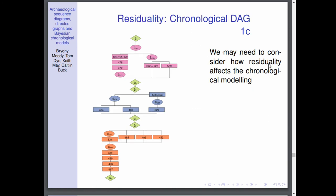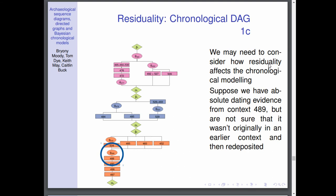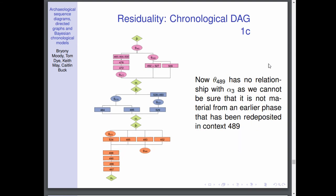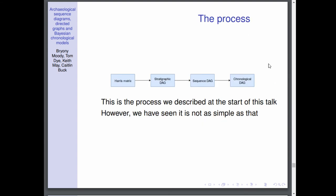A final idea we might want to look at is about residuality. Say that we found dating evidence in context 489, but we're not convinced that it wasn't from an earlier context and then redeposited. Then this changes the structure again, and now θ_489 no longer has a relationship with context 488 or α_3 because we can't even be sure that it comes from phase 3 anymore. It might have been from an earlier phase and redeposited. So even for just one sequence DAG, we've had three chronological DAGs already. It's a problem that grows quite quickly.